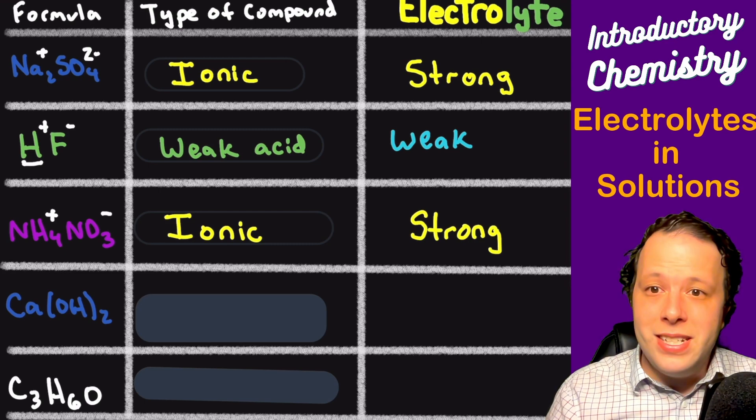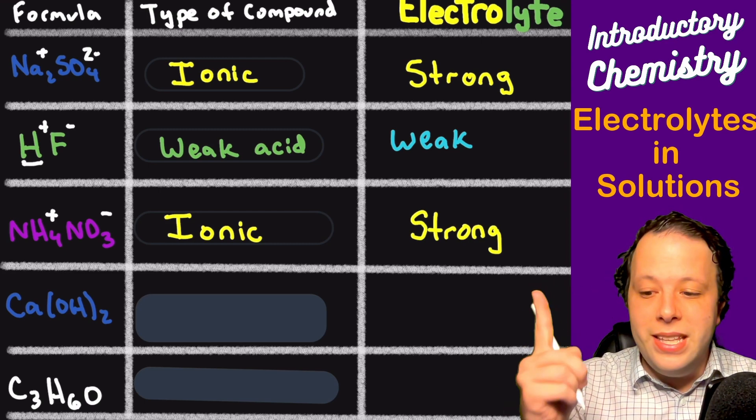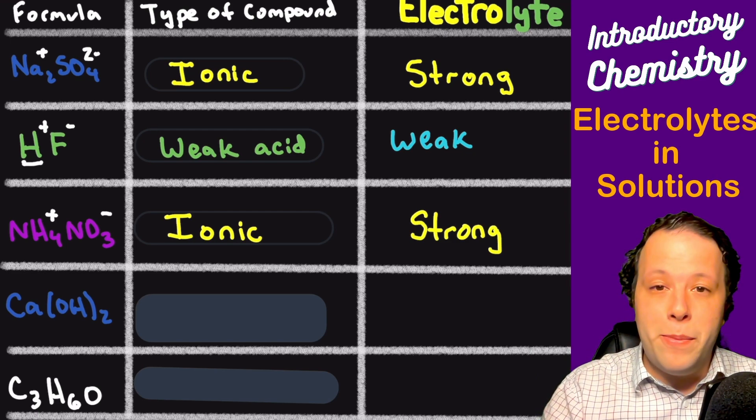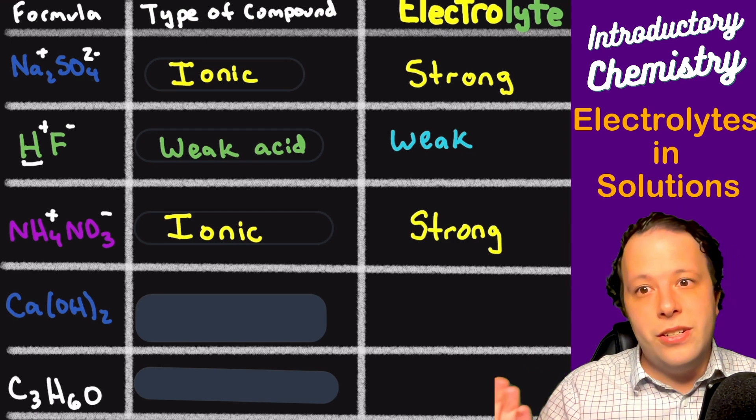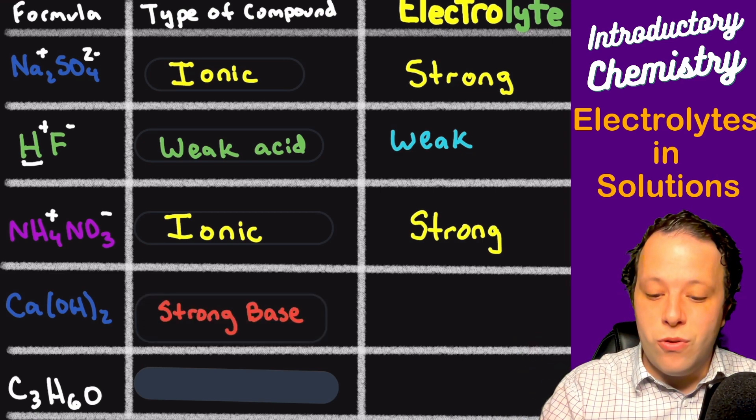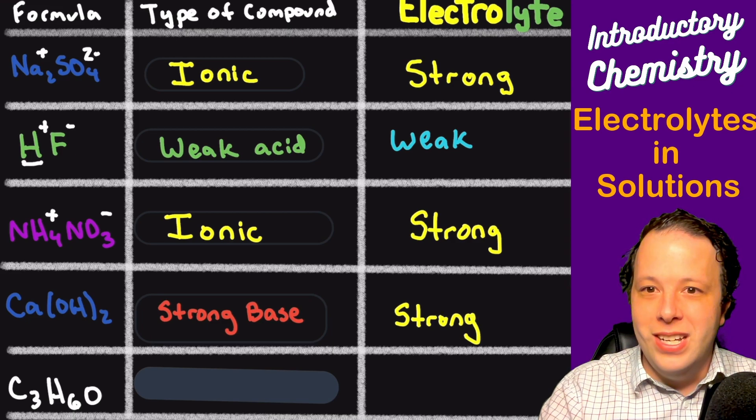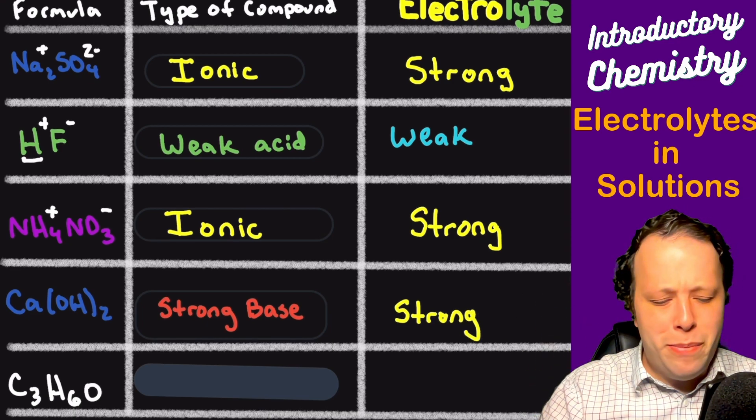Going to our next one, calcium hydroxide. Okay, hydroxide. So whenever we see that hydroxide, we have to remember base. So the question is, is it a strong or weak? So if you look at your list, you're going to quickly see that that's a strong base, meaning it's going to be a strong electrolyte. It's got the muscles behind it. It can help break it apart.